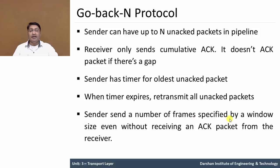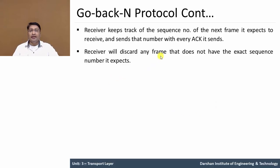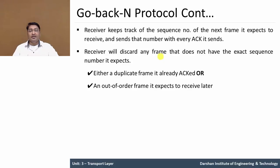The sender sends a number of frames specified by a window size, meaning the sender can send a particular number of packets at one time — for example 3, 4, or 5. This number is known as the window size. It sends without receiving acknowledgement from the receiver. The receiver keeps track of the sequence number of the next frame it expects to receive, for duplication prevention, and sends that sequence number with every acknowledgement. The receiver will discard any frame that does not have the exact sequence number it expects — meaning it is either a duplicate frame already acknowledged or an out-of-order frame.